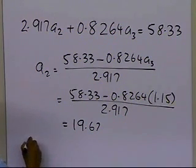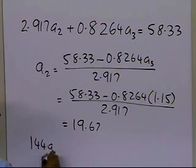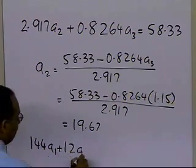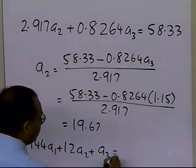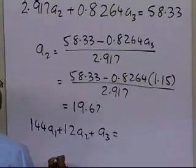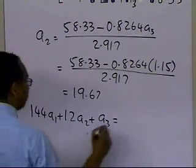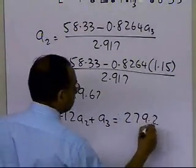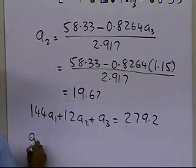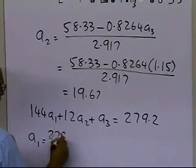Now let's look at the first equation: 144 a1 plus 12 a2 plus a3 equals 279.2. To find a1, we get 279.2 minus 12 a2 minus a3, divided by 144, since a2 and a3 are known.